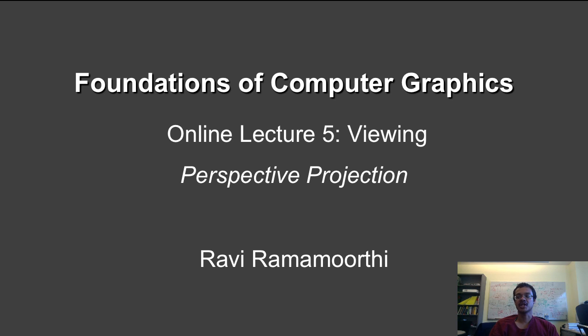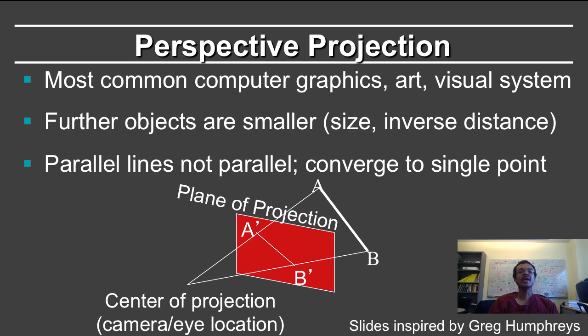We now come to perspective projection. If you look at objects around you, whether it's with your eyes, whether you look at computer graphics imagery, even if you look at art after the Renaissance, we see that objects that are further away become smaller. In fact, a common experiment is you place a quarter in front of your eye and you can block out the moon or the sun, when clearly they're much bigger than the quarter.